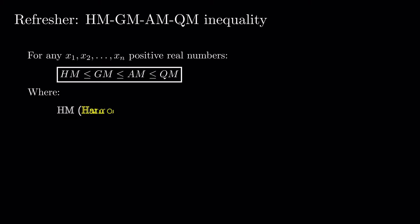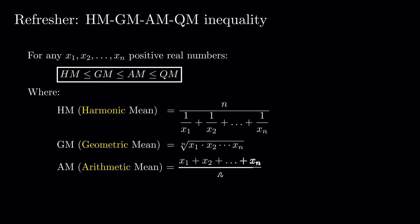For any set of n positive numbers we have HM ≤ GM ≤ AM ≤ QM where the harmonic mean is n divided by the sum of the reciprocals of the numbers, the geometric mean is the nth root of the product of the numbers, the arithmetic mean is the sum of the numbers divided by n, and the quadratic mean is the square root of the arithmetic mean of the squares of the numbers.